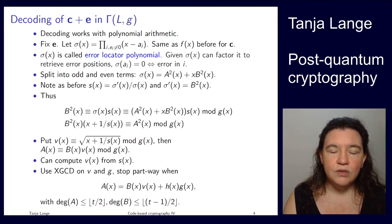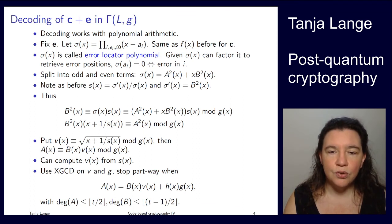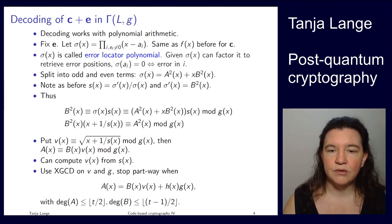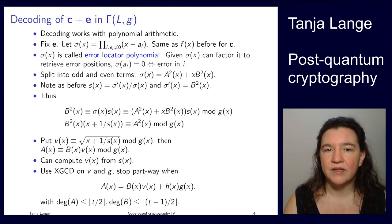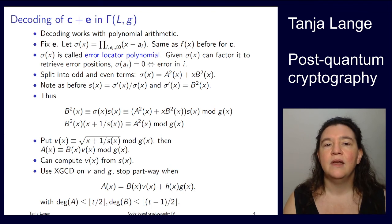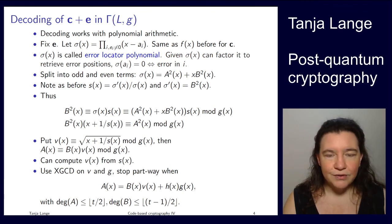So this is how you decode the Goppa code without knowing anything about the matrix. We do not need to store the public key matrix in order to decode it. We only need to remember the support L — because that tells us where each a_i is sitting once we find it as a root of sigma — and we need to have g. So we do not need S and P to be able to decode.